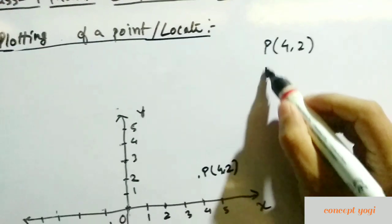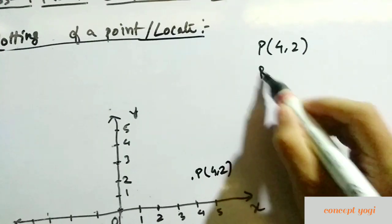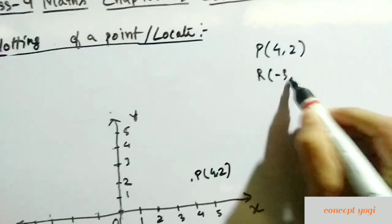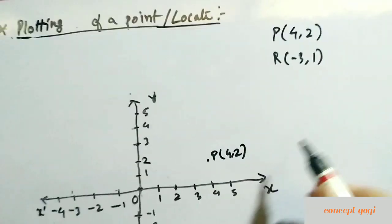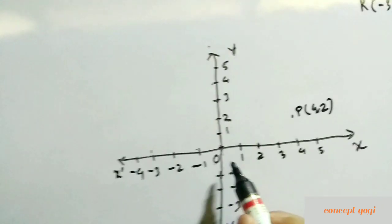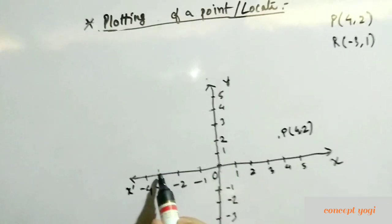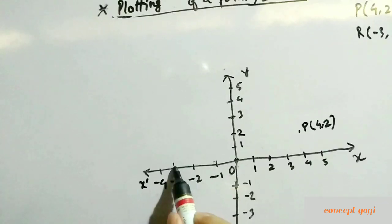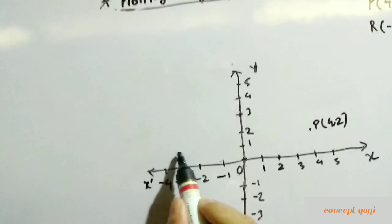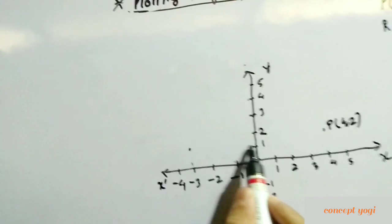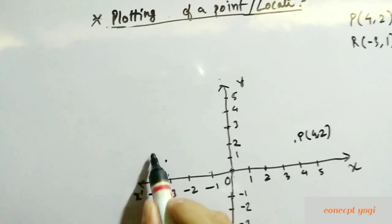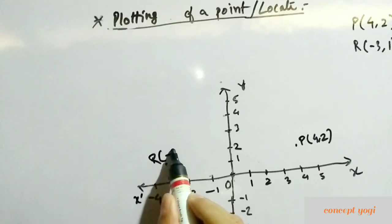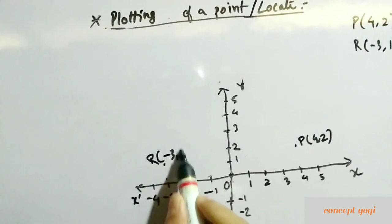Similarly, if the point is R(-3, 1), the x-coordinate is minus 3, so we go to minus 3 on the x-axis. The y-coordinate is 1, so from there we go 1 unit up. So this is our point R(-3, 1).